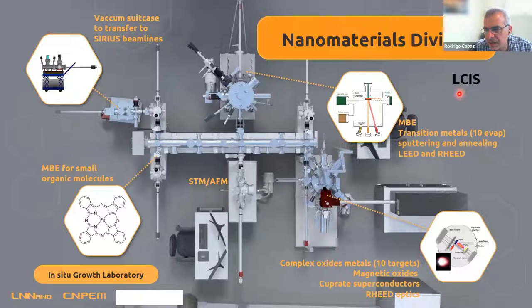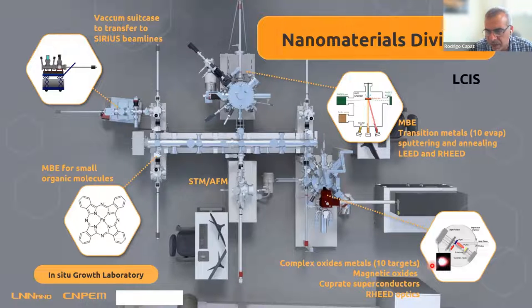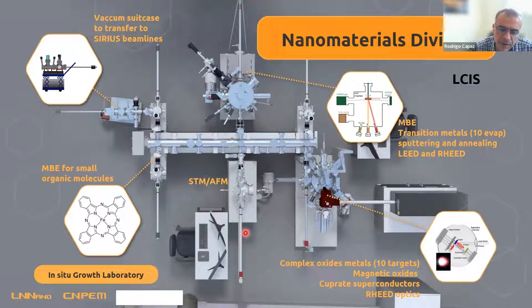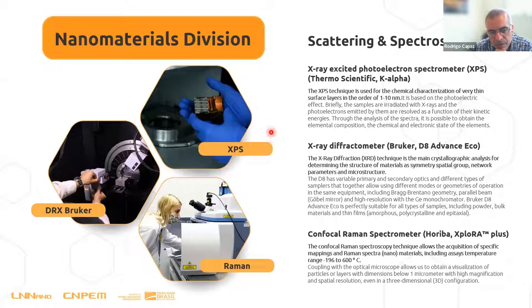We also have a lab of scanning electron microscopy in dual beam with a focused ion beam microscope, a large AFM facility with four different AFMs working on different types of samples from biological to material science. The Elsys in-situ growth lab is in the same building as Sirius — it's a lab for growing samples with PLD (pulsed laser deposition), two MBEs (one for metals, one for molecules), an STM/AFM characterization tool, all within the same vacuum tunnel, plus a vacuum suitcase to transfer samples to Sirius.